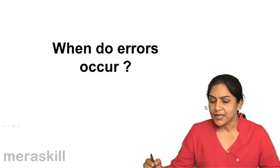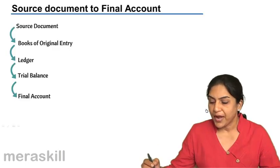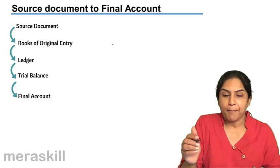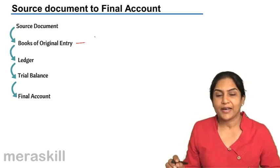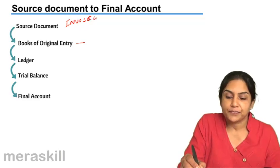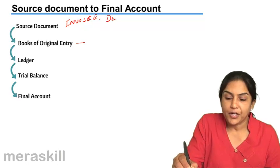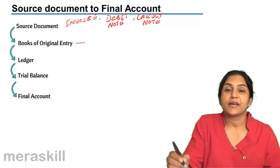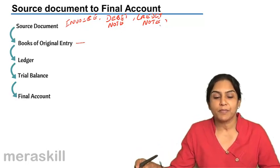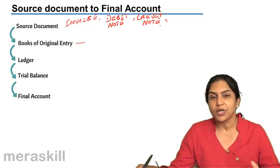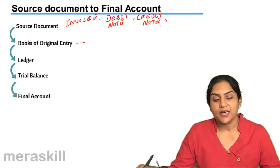To understand when errors occur, we need to look at the different stages of accounting. We prepare the journal — the books of original entry — from source documents like purchase invoices, sales invoices, debit notes, credit notes, and receipts. The common books of original entry include the cash book, purchase day book, sales day book, purchase return book, and sales return book.